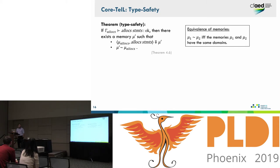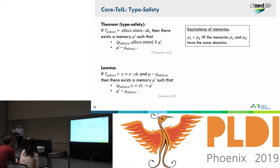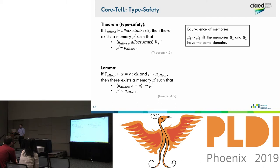This type safety theorem is basically a consequence of type safety for individual statements. You prove type safety for programs by induction over the length of the statements in the program. Type safety for a statement is captured by a lemma: if we can evaluate the statement x = e to a new memory mu_prime, then by the premises of the statement evaluation rule, you can't have out-of-bounds accesses — or in terms of the formal development, you can't have accesses to the map mu that lead to undefined values.